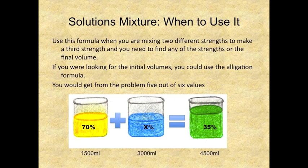You will use this formula when you are mixing two different strengths to make a third strength and you need to find any of the strengths or the final volume. If you were looking for the initial volumes you could use the allegation formula. You would get from the problem 5 out of 6 values.